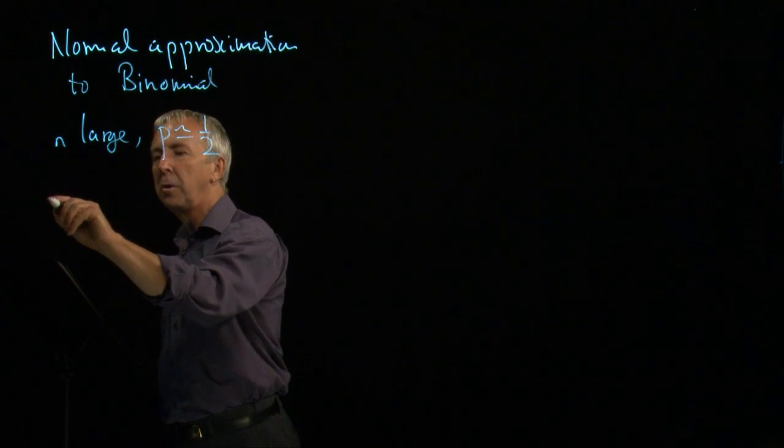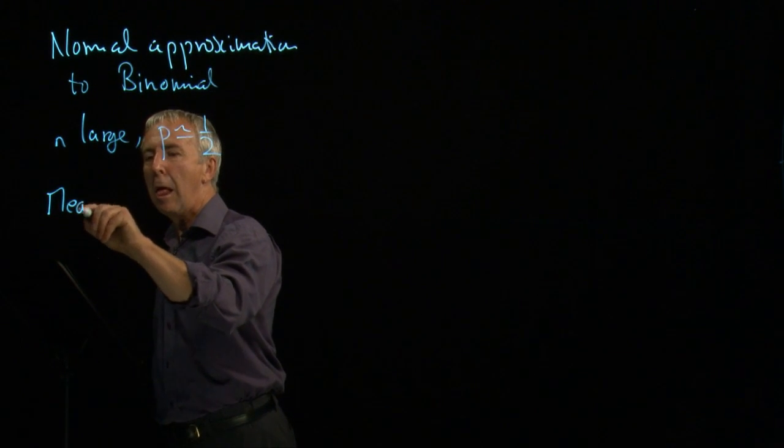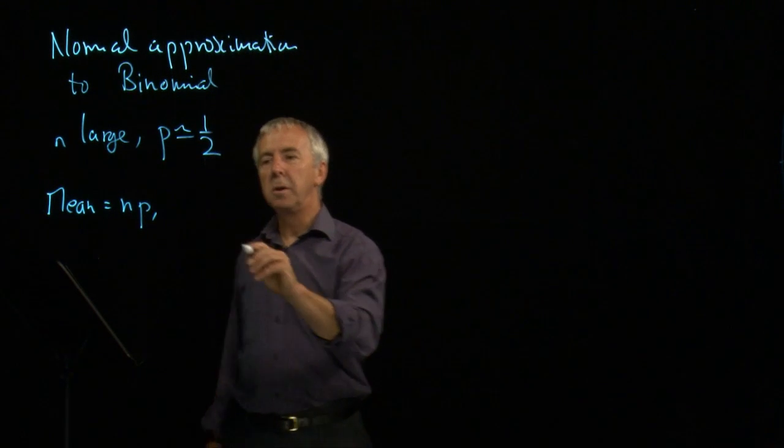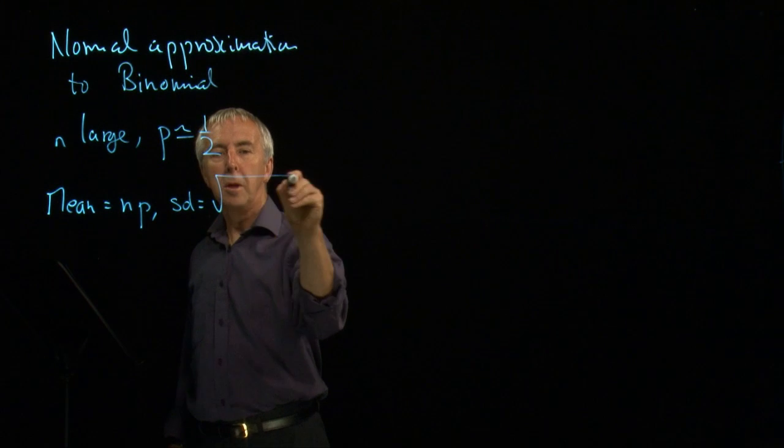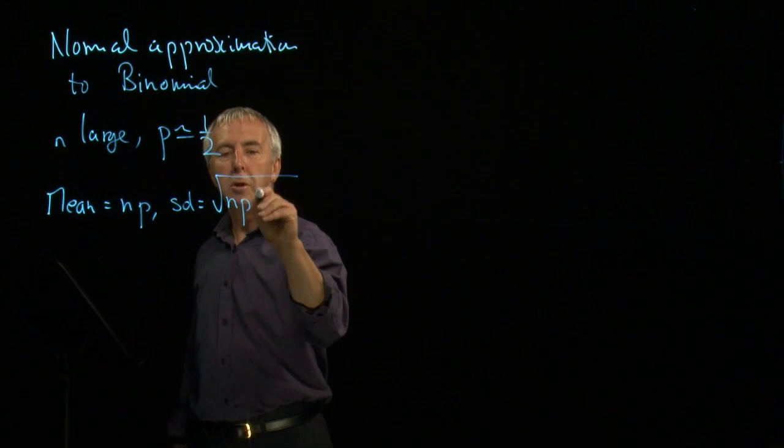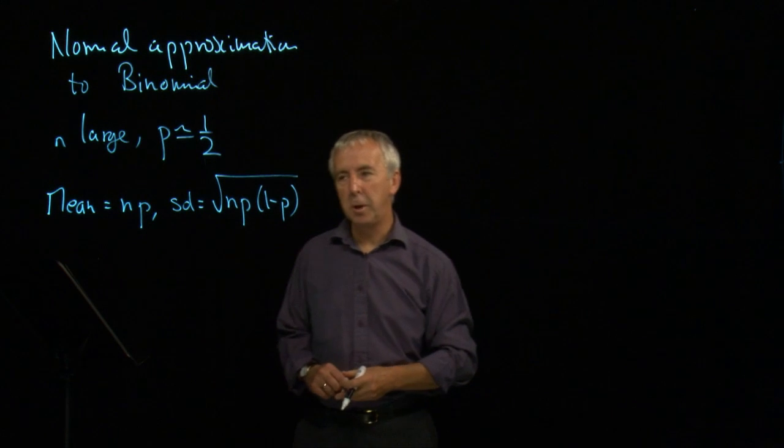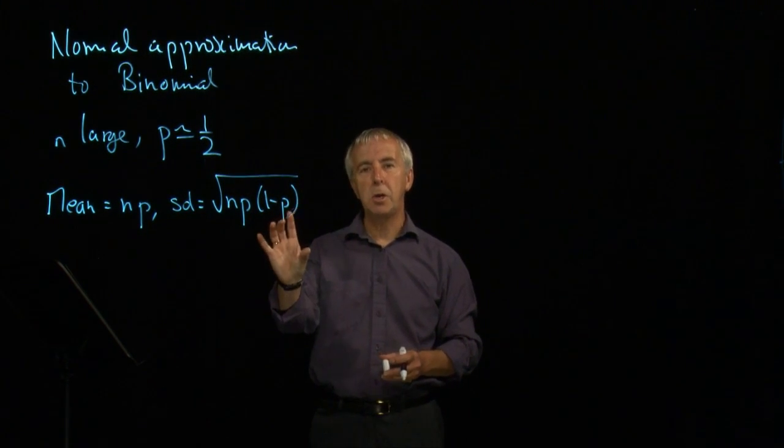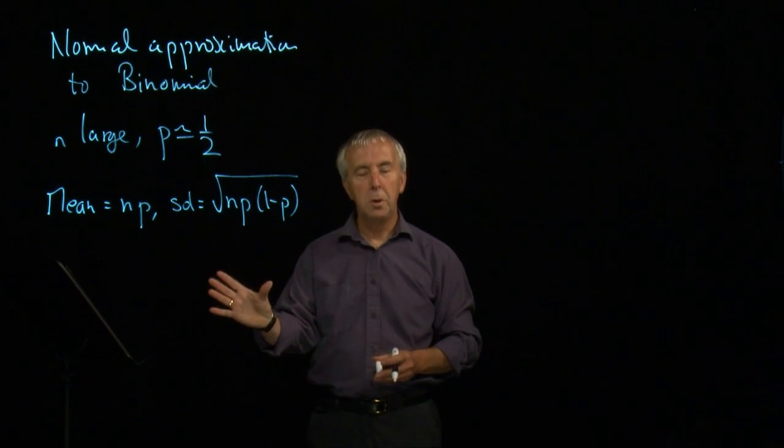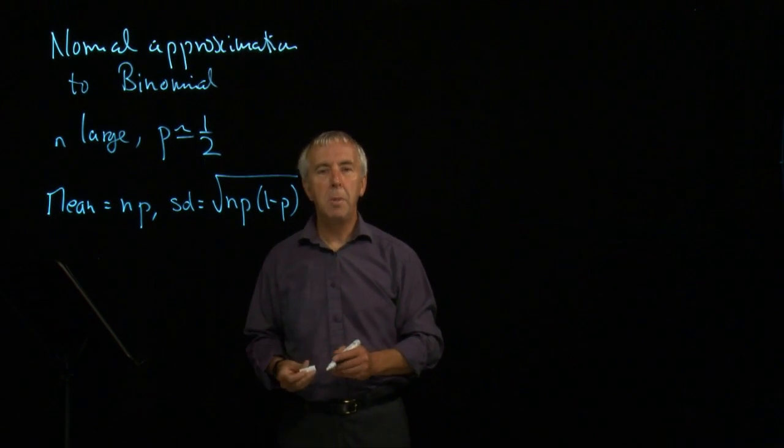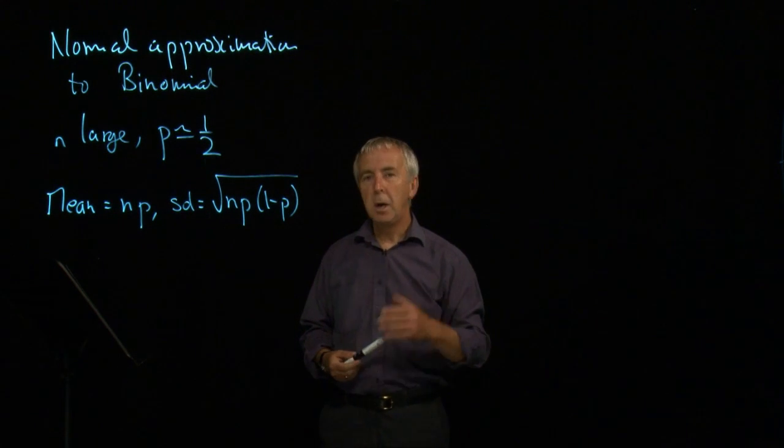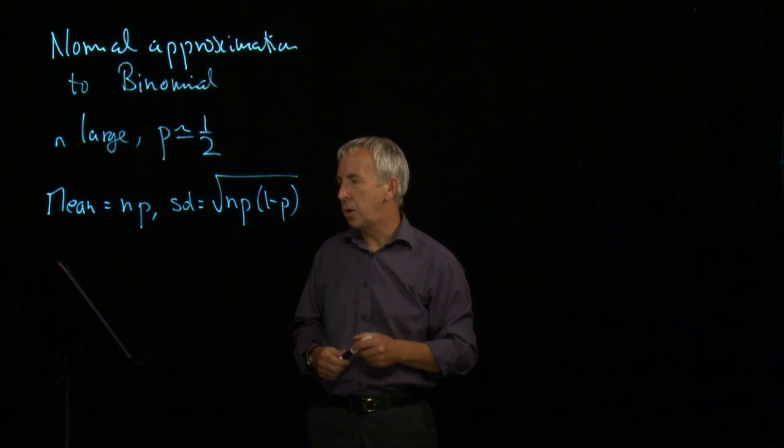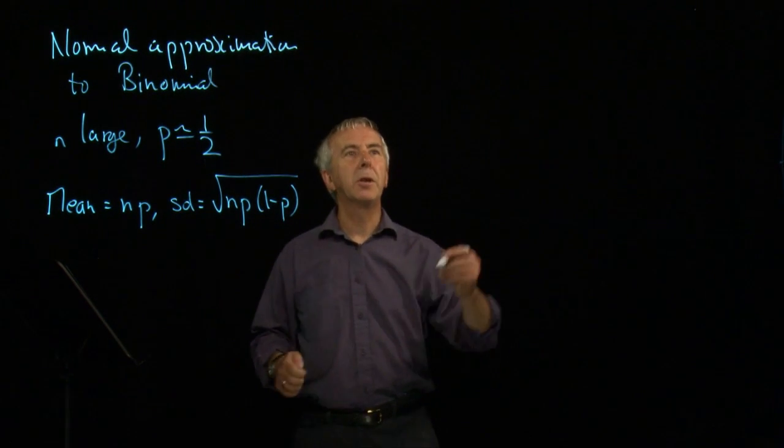But in these cases, we then use the mean is np. And the standard deviation for a binomial is the square root of np times 1 minus p. And we can use those parameters, that mean and that standard deviation, to go to a normal distribution rather than the binomial. And again, it will be an approximation, but it will be fairly accurate as long as the conditions are fulfilled. So let's look at an example.